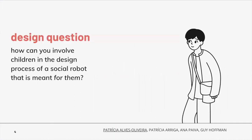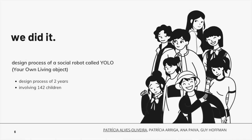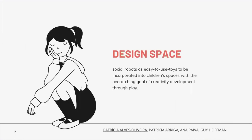In this work, we want to precisely understand how we can involve children in the design process of a social robot from the very beginning. We are especially interested in what methods and which tools are necessary to design a successful robot for children. It was a long design process of two years involving 142 children. Our design space concerned the development of a social robot to be used as a toy, whose goal was to develop creativity in children during play times.